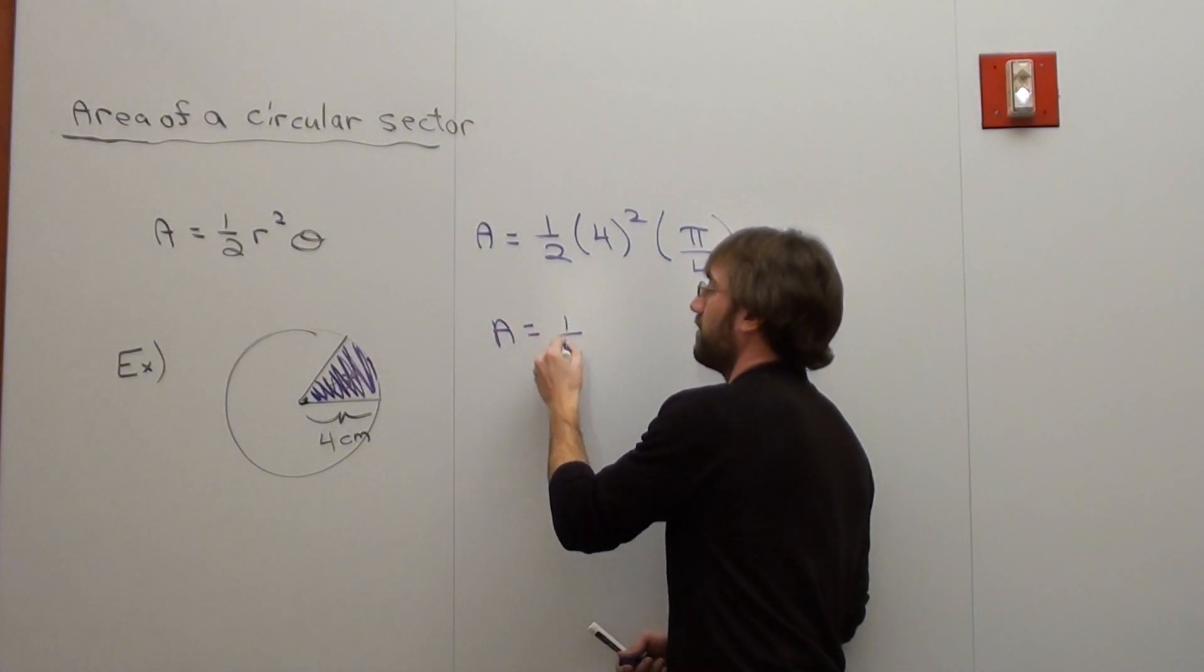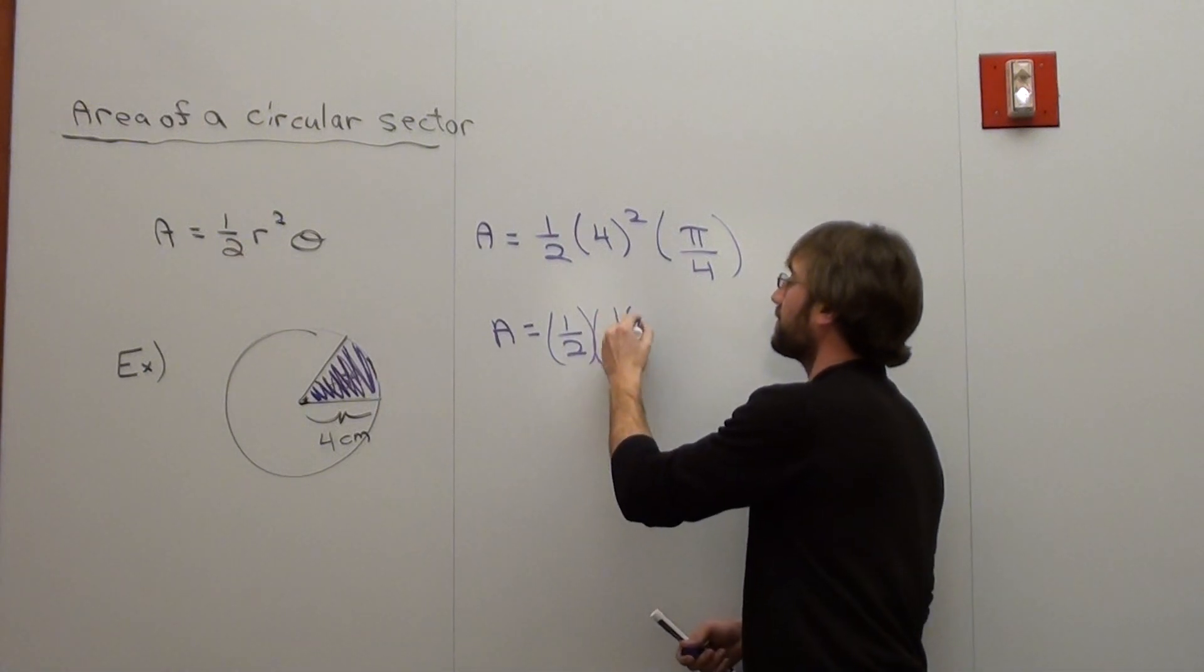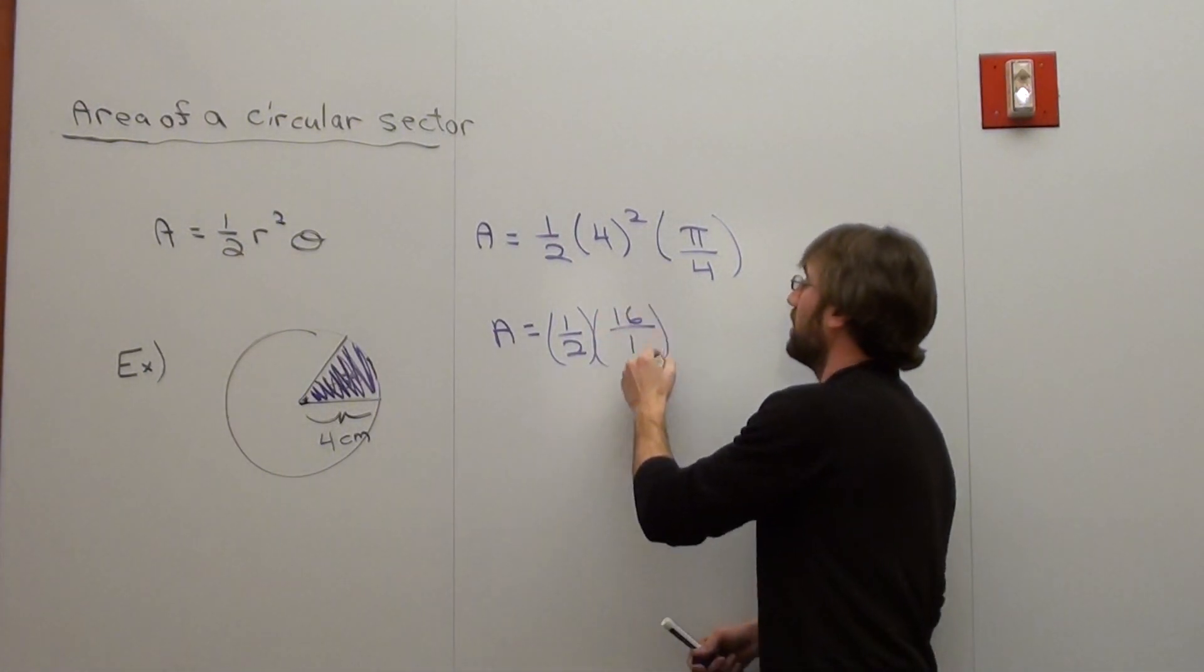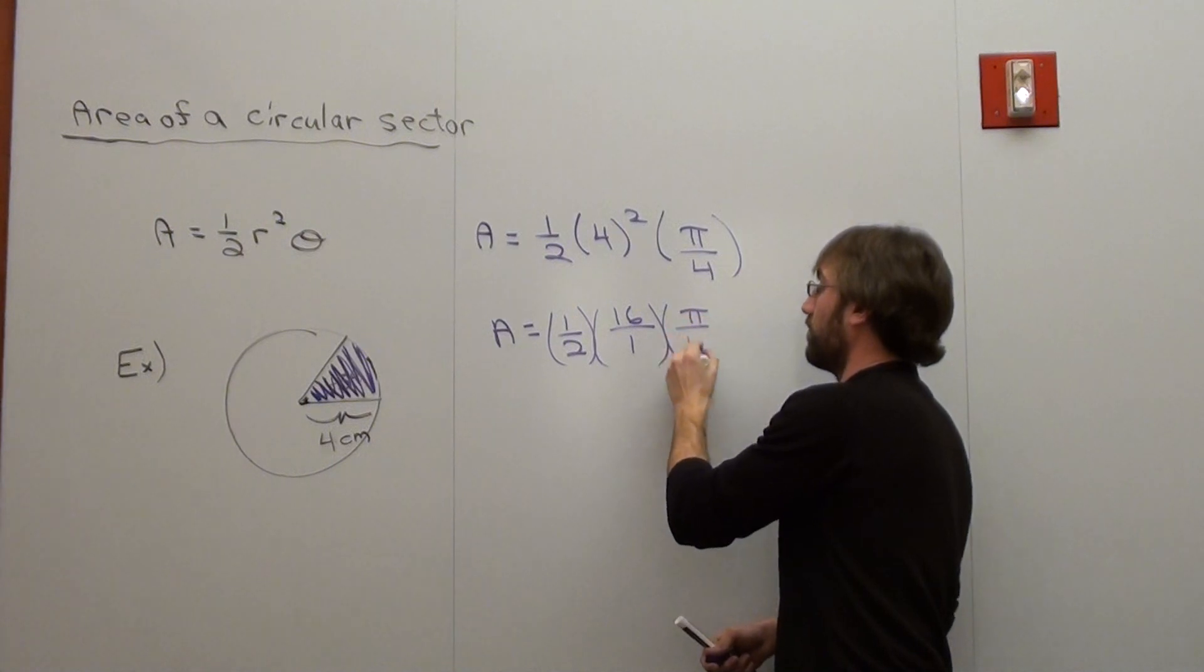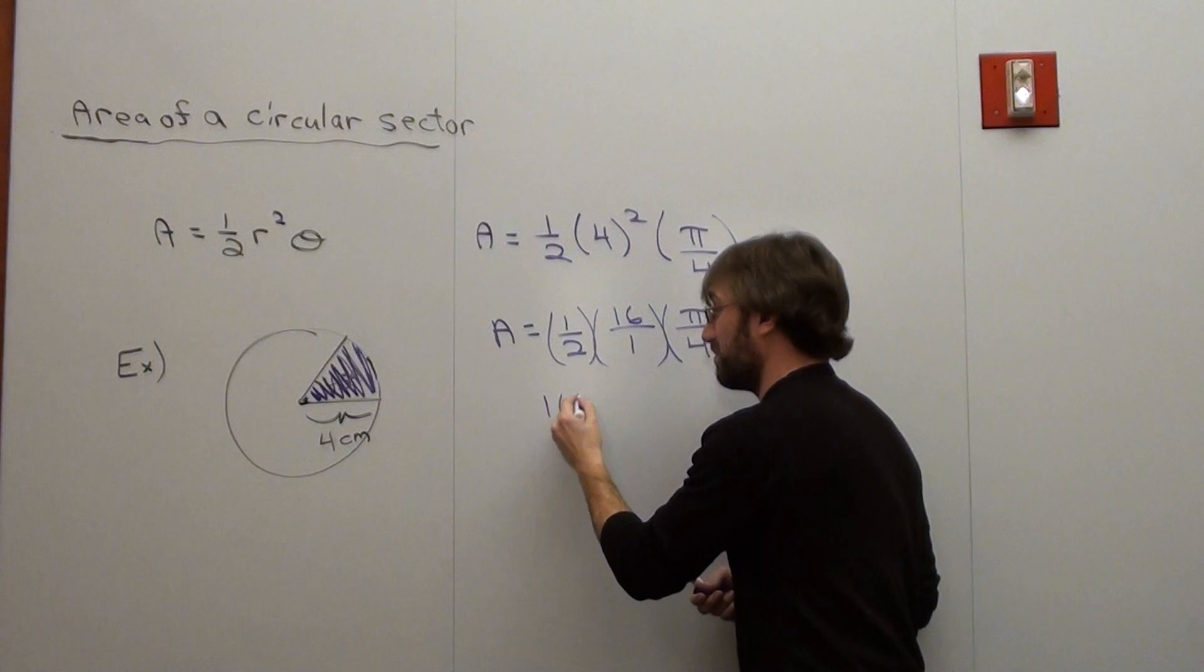Area equals one half. 4 squared is 16. You can put 16 over 1 if that's going to help you. Times pi over 4. So I've got 1 times 16 times pi is 16 pi.